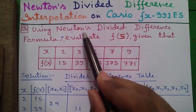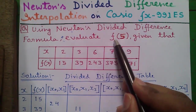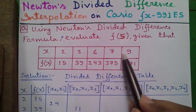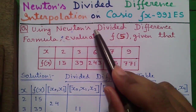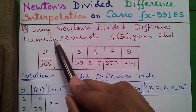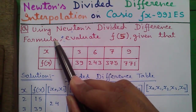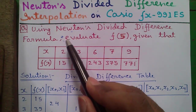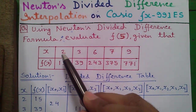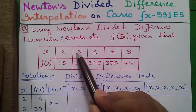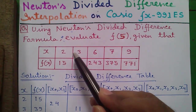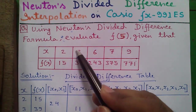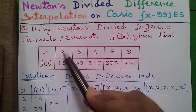This is our question — we have to find out or evaluate f of 5 from the following table with the help of Newton's divided difference interpolation formula. For some basics, Newton's divided difference formula is used when there is unequal gapping between each term of x. That means here you can see the gap between these two terms of x is 1.